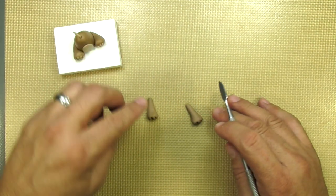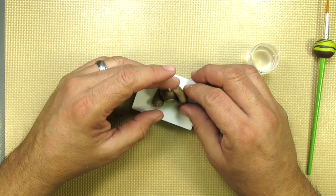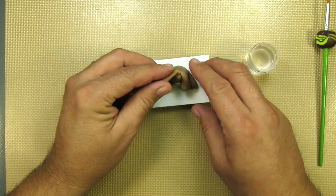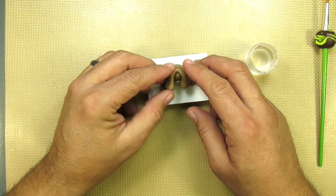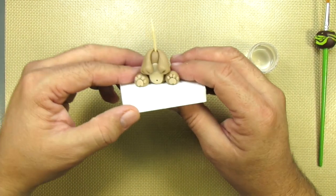Once everything's nice and smooth, we're just adding a little bit of edible glue and adding the arms to the torso. You want to make sure that everything looks nice and even. You don't want one arm hanging down lower than the other, and just make sure everything's nice and pressed up against the torso. Super cute.